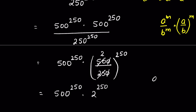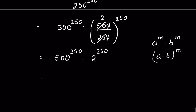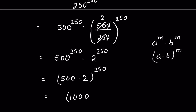Again, if a raised to the power m times b raised to the power m, we can write it as a times b whole raised to the power m. Therefore, it will be 500 times 2, whole raised to the power 250. 500 times 2 is 1000, so we get 1000 to the power 250.